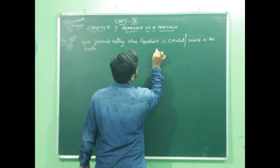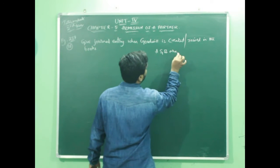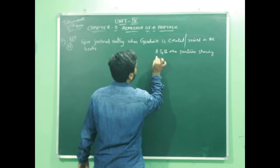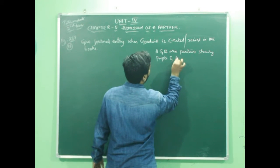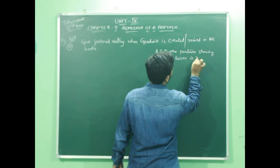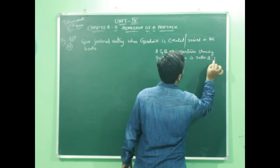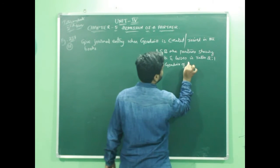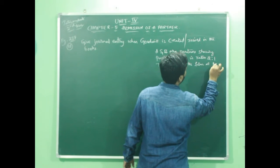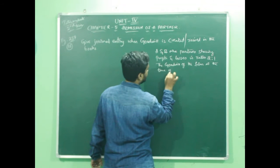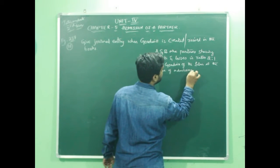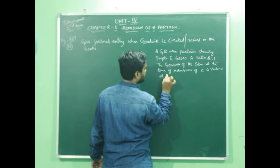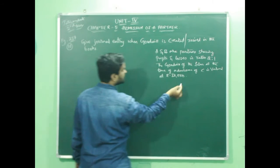Let us take an example that A and B are partners sharing profits and losses in ratio 2 is to 1. The goodwill of the firm at the time of admission of C is valued at rupees 30,000. Pass the general entry.